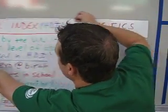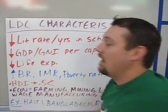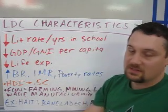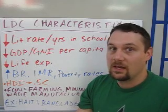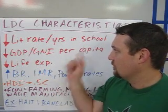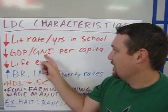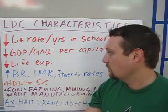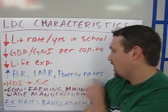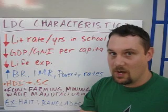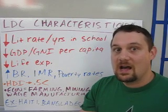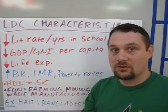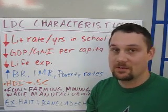Let's get into what these categories actually mean — how a country gets to be known as an LDC, an NIC, or an MDC. First, LDC characteristics: they have low literacy rates and years in school, low GDP and GNI per capita — meaning their people don't make much money — and low life expectancies. But they have high birth rates, high infant mortality rates, and high poverty rates. Their population is usually growing; this is where we see the highest population growth in the world, because you have a high birth rate but lower death rates due to the introduction of very basic medical services.